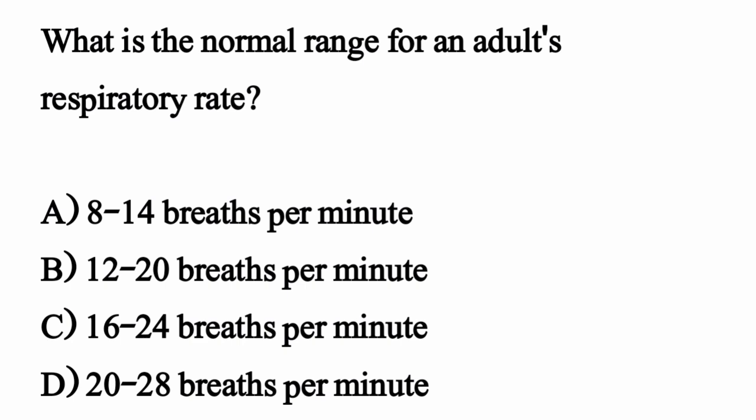What is the normal range for adult respiratory rate? The correct option is Option B: 12 to 20 breaths per minute.